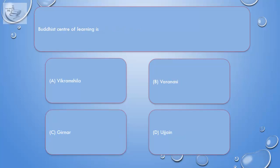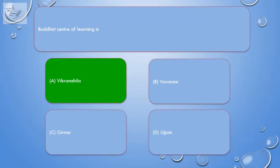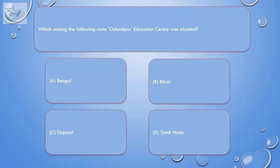Question. Buddhist center of learning is — A. Vikramshila. B. Varanasi. C. Girnar. D. Ujjain. Correct answer is A. Vikramshila. Question. In which among the following states was the Odantipur education center situated?